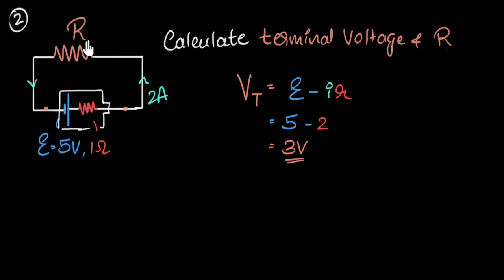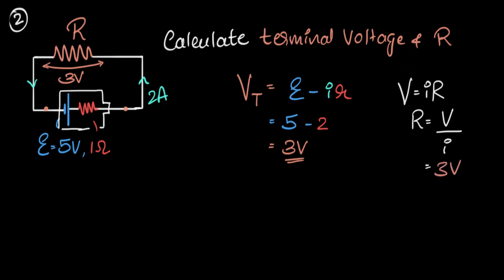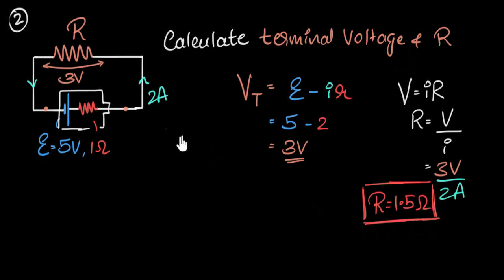Now to calculate the external resistance: the voltage across the battery terminals (three volts) equals the voltage across the external resistor. We know the current is two amperes. Using Ohm's law: R = V/I = 3/2 = 1.5 ohms. That is our external resistance.